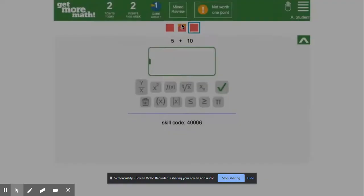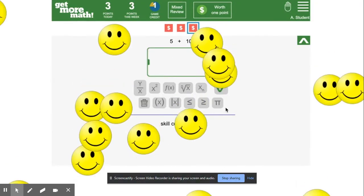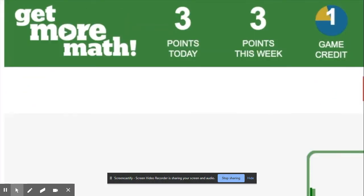If a skill has a dollar sign, that means that if you do that problem, you get a point, as long as you get it right on your first try. At the top of your screen, you can see your points for the day, the week, and your game credits, which are earned by getting points and can be spent on playing games.